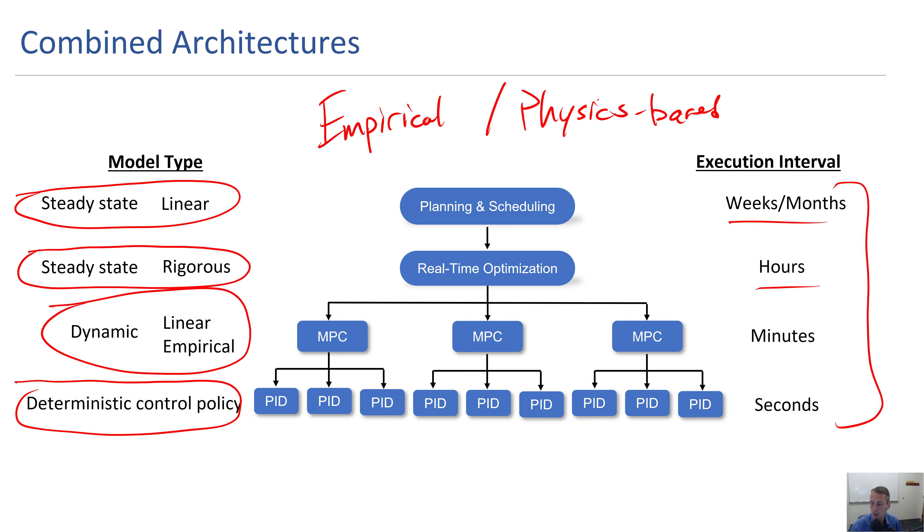We also talk about combining architectures. We have empirical and we have more of the physics-based modeling approaches. We see that in the typical hierarchy for controlling chemical plants, refineries and others.